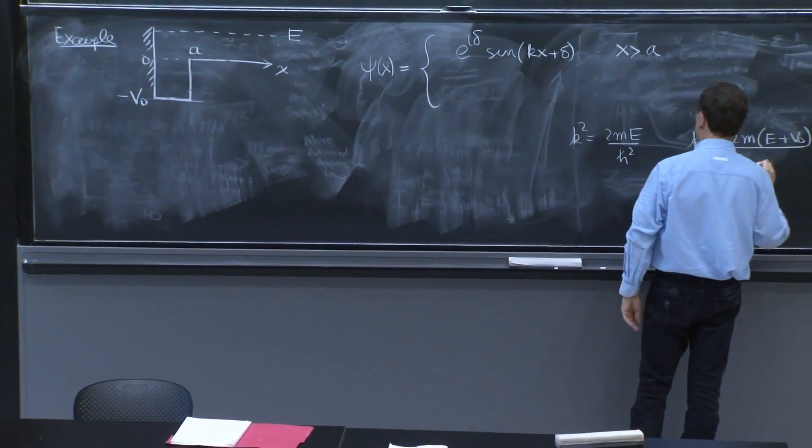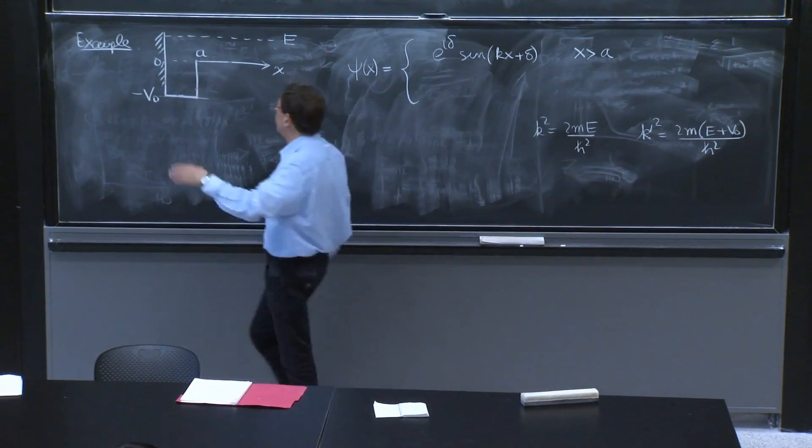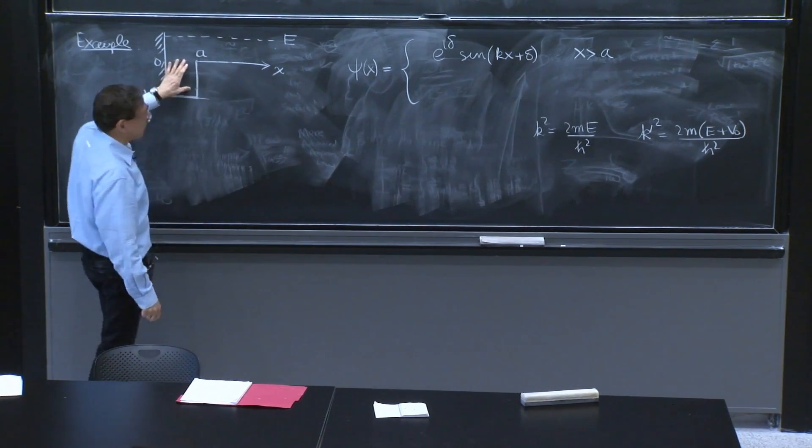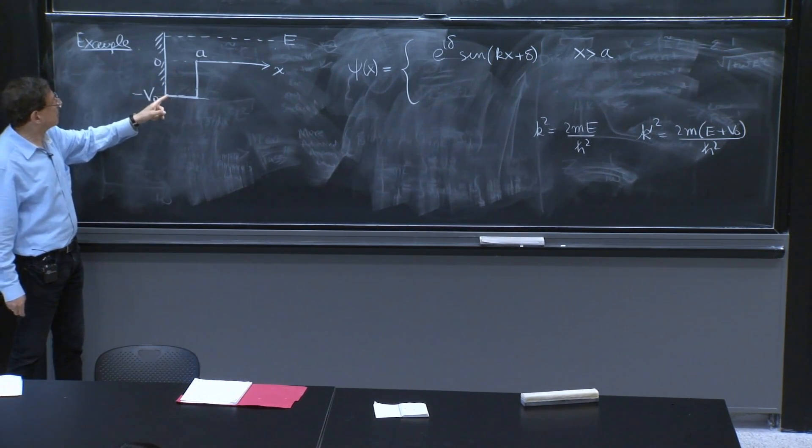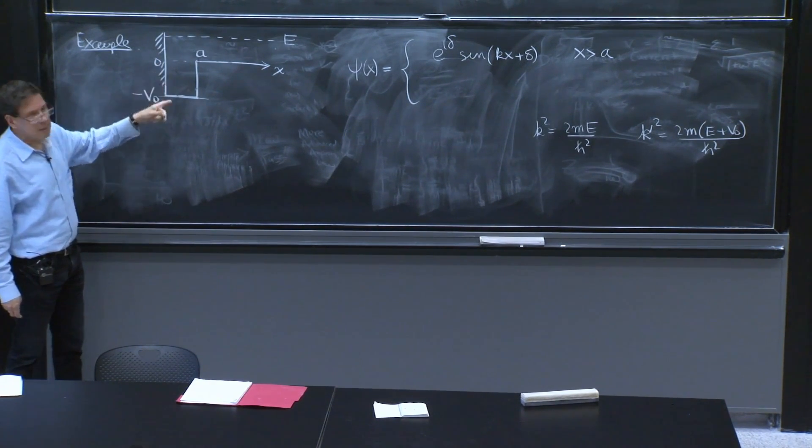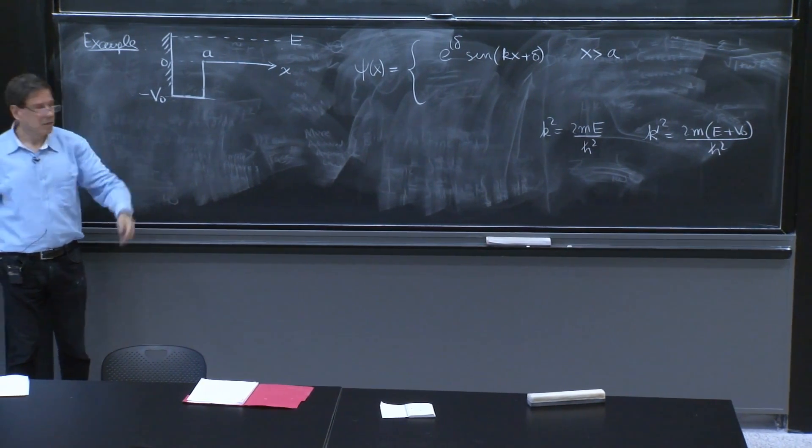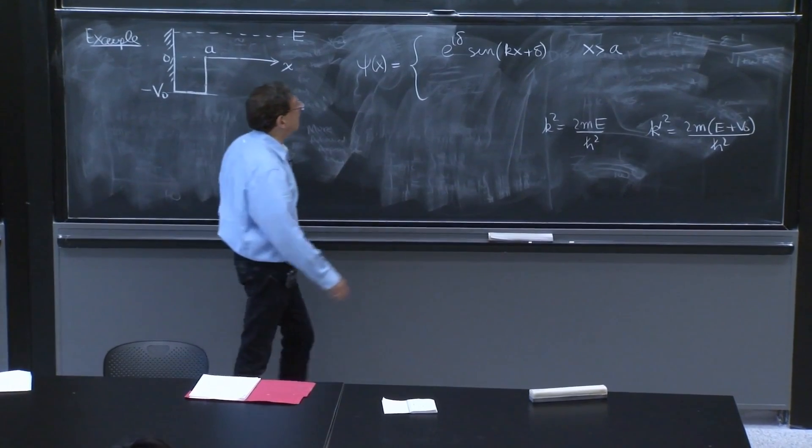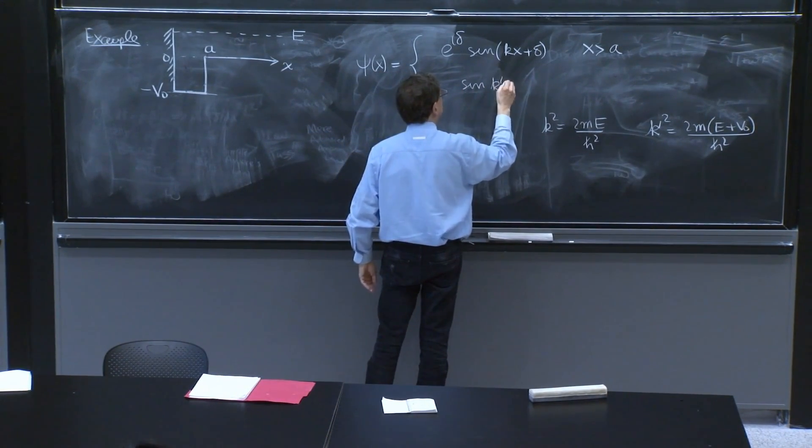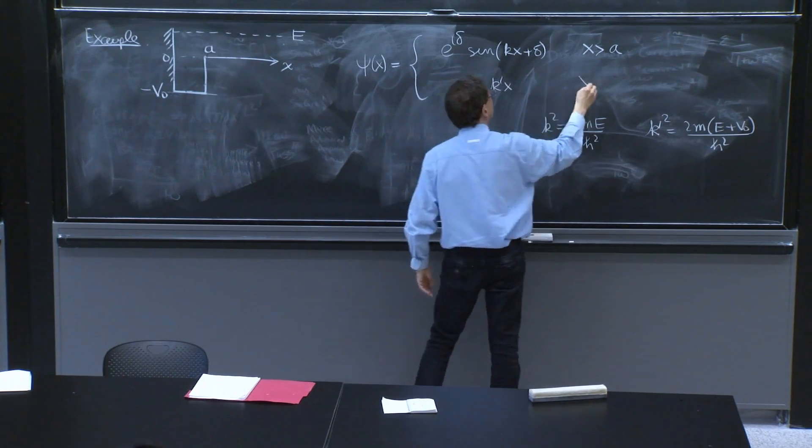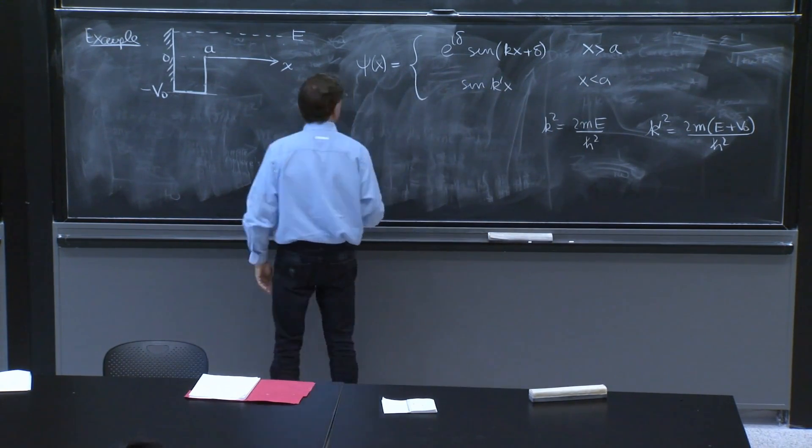And, yes, the solutions could be e to the i k prime x or e to the minus i k prime x. But since they must vanish at 0, it should be a sine function. So the only thing we can have here is a sine of k prime x for x less than a and a coefficient.